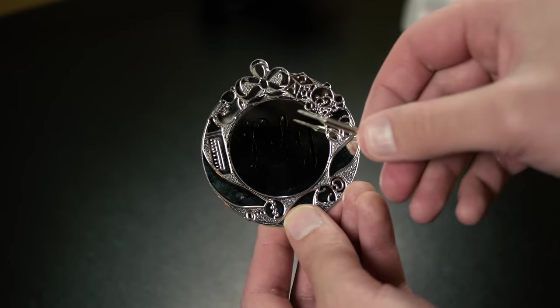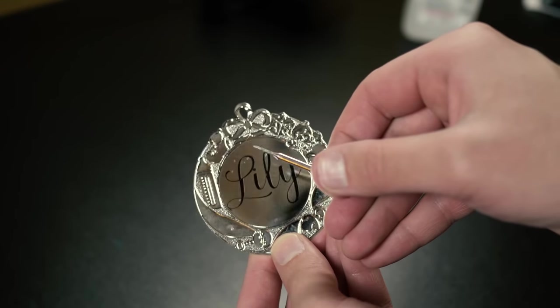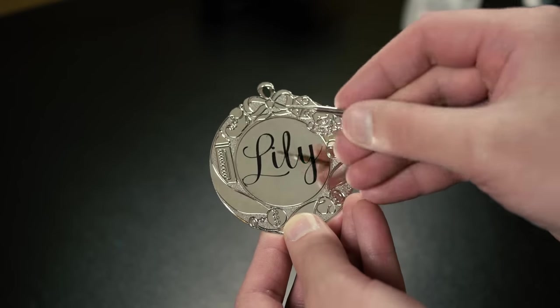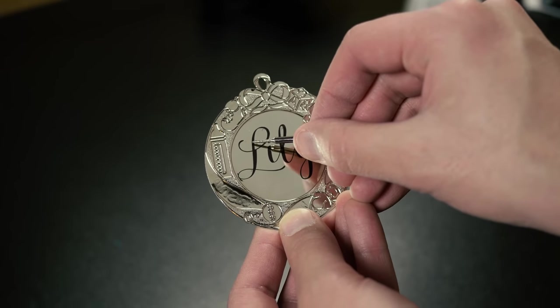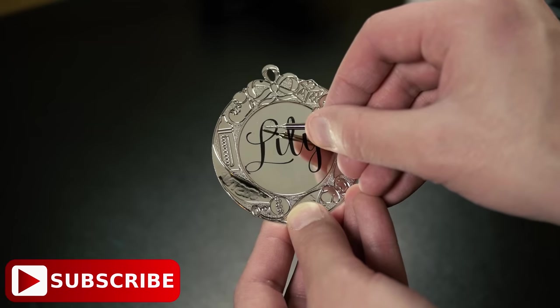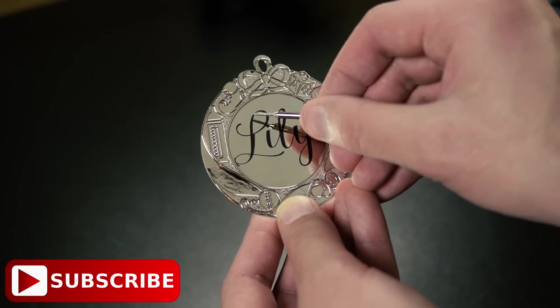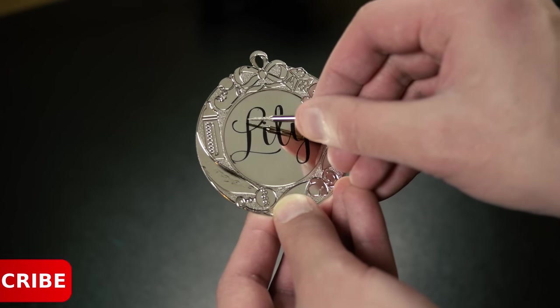Now the next thing is to take one of these sharp diamond burrs right here and we're going to go right in there along the edges here and just lightly score this out. Not engraving really deeply but just scratching the surface.